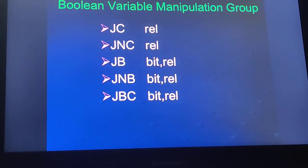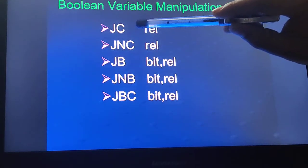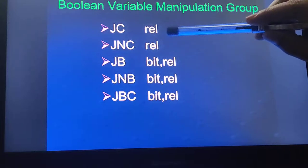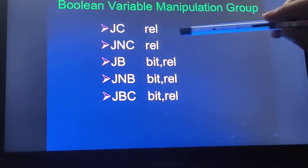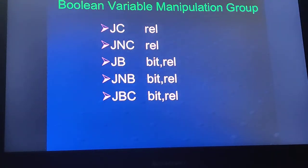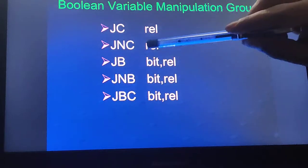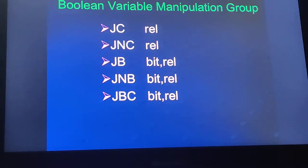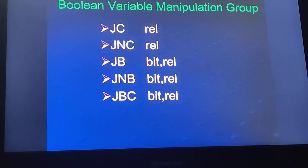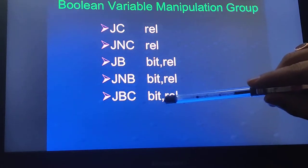These are the jump instructions: JC — jump on carry to the address specified in the instruction; JNC — jump if no carry; JB — jump if bit set; JNB — jump if not bit set; and JBC — jump if bit set and clear bit.